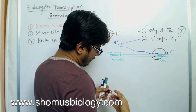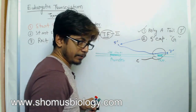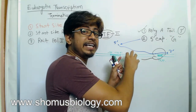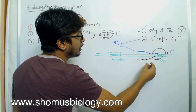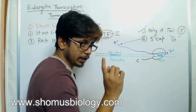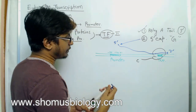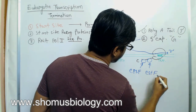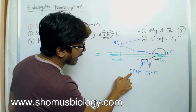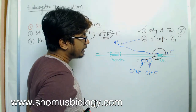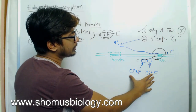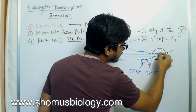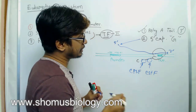RNA polymerase II has a C-terminal tail, and attached to this C-terminal tail at the middle point of elongation are two proteins: CPSF — Cleavage and Poly-Adenylation Specificity Factor — and CSTF, which is Cleavage Stimulating Factor. These are the two proteins linked with the C-terminal tail of RNA polymerase II.